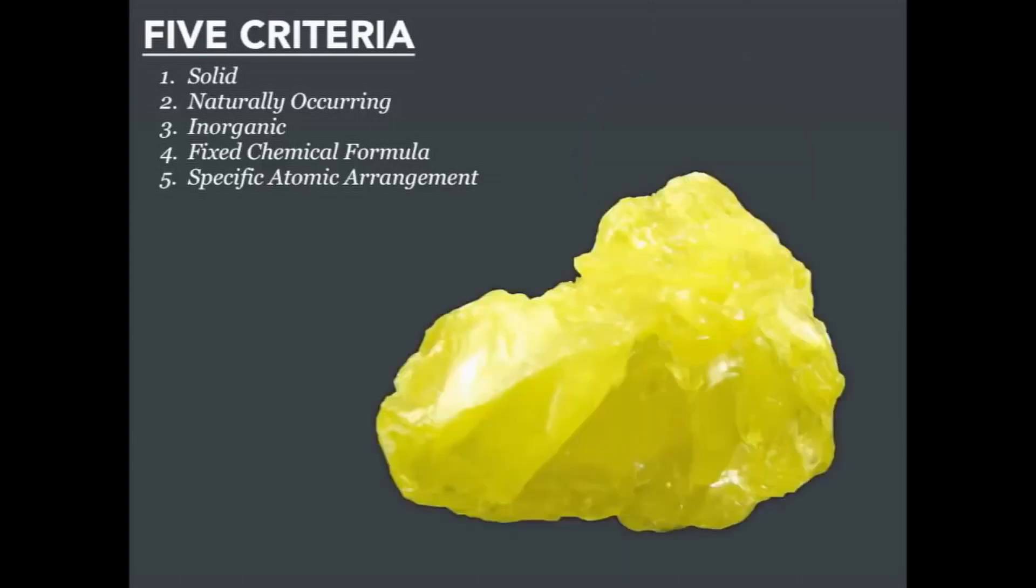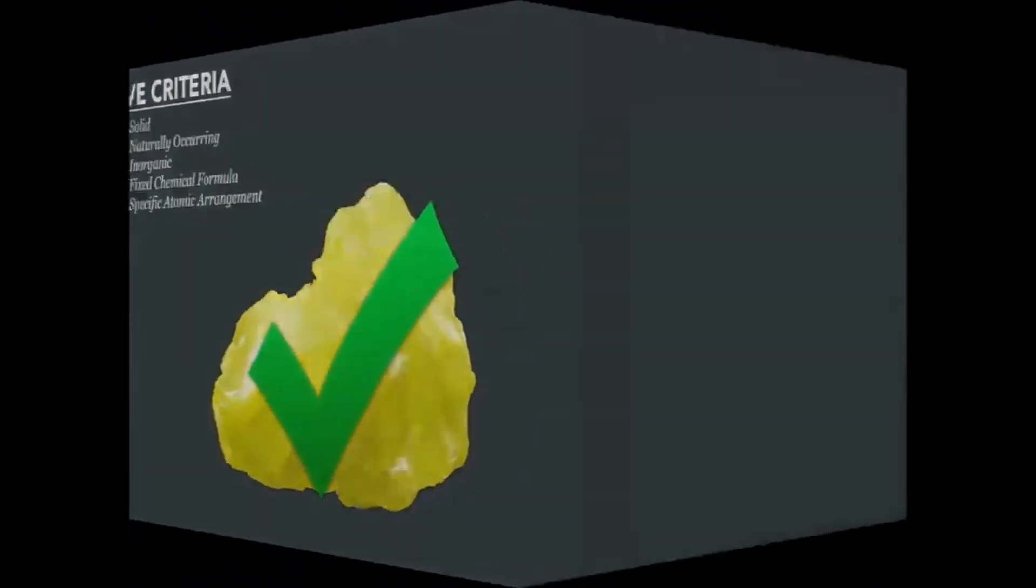What about this substance? This is sulfur. As you can see, sulfur exists as a solid. That's good. It's naturally occurring. It forms along volcanoes. It is inorganic. It's not living, and it never was living. It has a specific chemical formula. It's composed of the element sulfur, and it has a very specific atomic arrangement. If we could zoom in, we would see the atoms arranged in a specific way. So, for our criteria to be met, sulfur works. So, it is considered a mineral.